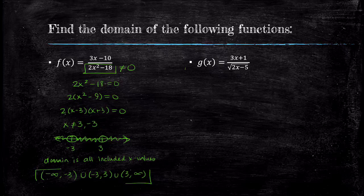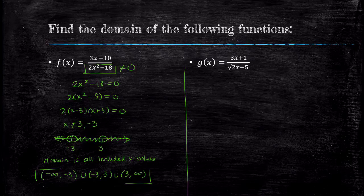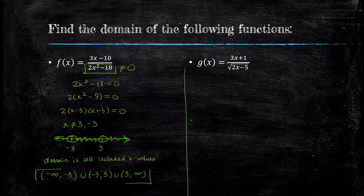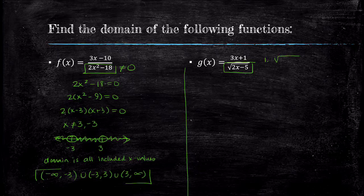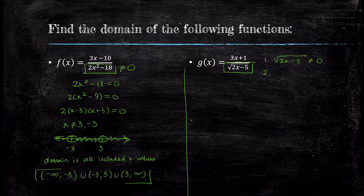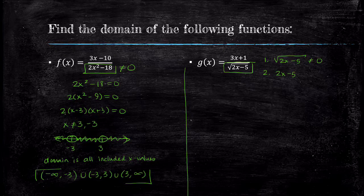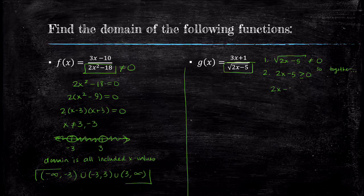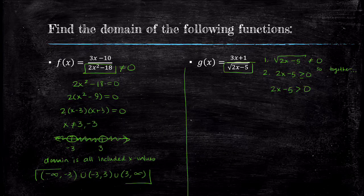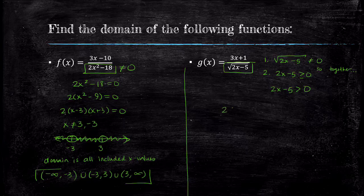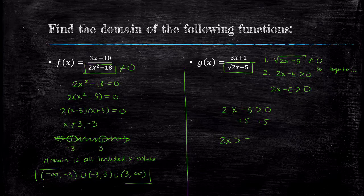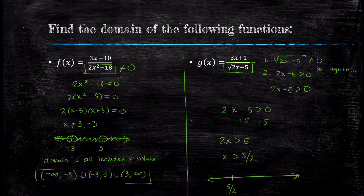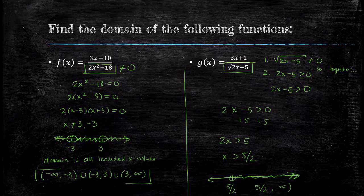Moving on to our next example: g(x) = (3x + 1)/√(2x - 5). We see a combination of issues—division and an even root. We know 2x - 5 must be greater than or equal to 0 to square root it, but because it's in the denominator, we can't have √0. This means 2x - 5 must be strictly greater than 0. Solving the inequality, x must be greater than 5/2. In interval notation, that is (5/2, ∞).